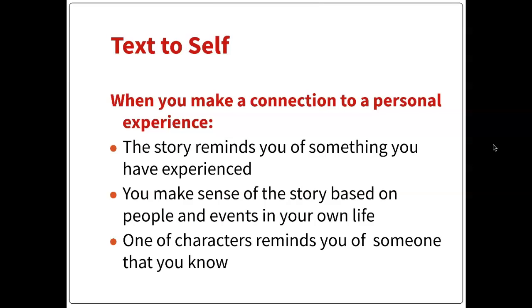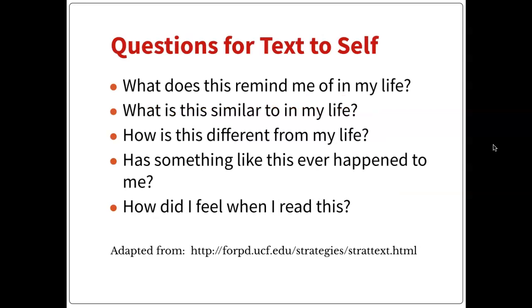The first type is text-to-self. This is when you make a connection to something that happened to you — the story or article reminds you of something that happened in your life, or maybe someone else's life that you know, like your mom or your friend. That's still text-to-self, even if it reminds you of your friend, because your friend is still connected to you. Questions for text-to-self: What does this remind me of in my life? What is this similar to in my life? How is this different from my life? Has something like this ever happened to me? And how did I feel when I read this?